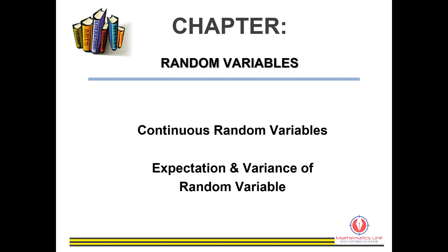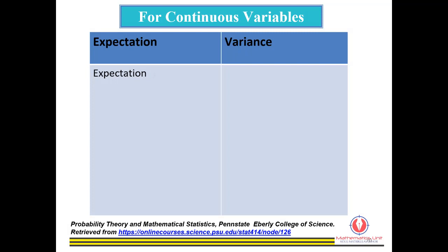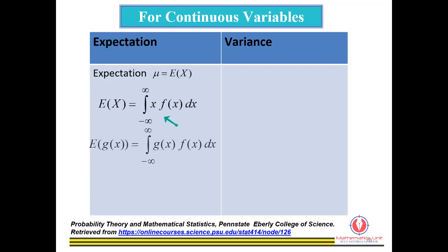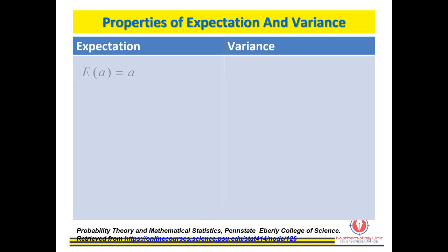Hi, today we continue with expectation and variance for continuous random variables, and these are the learning outcomes. For CRV, we have expectation E(X) — we integrate X multiplied with the function — and E(X²) multiplied with X², and the variance.